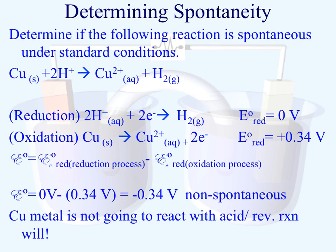We can determine if a reaction is going to be spontaneous or not based on our half reactions, our reduction potentials, and the subsequent cell potential we calculate for the overall process. In the example given here, we have copper being oxidized and hydrogen being reduced.